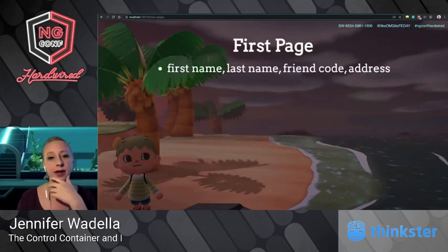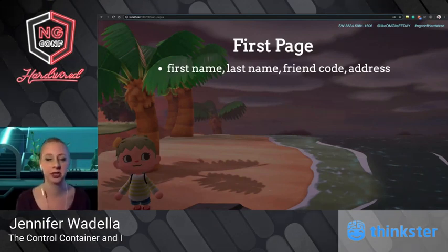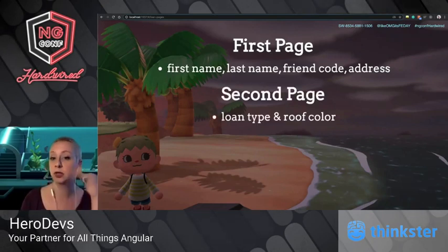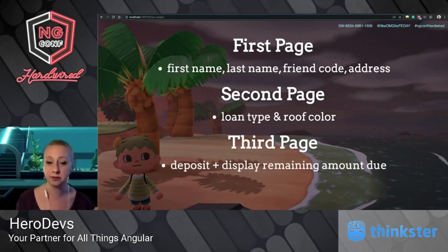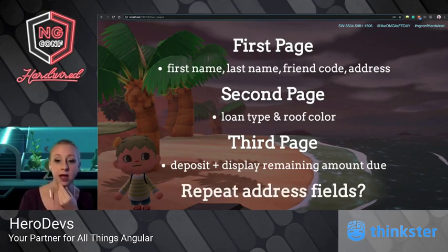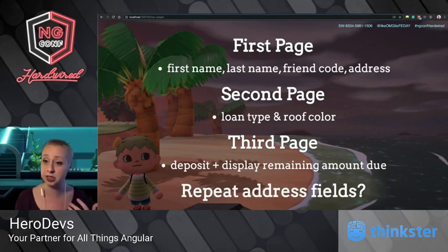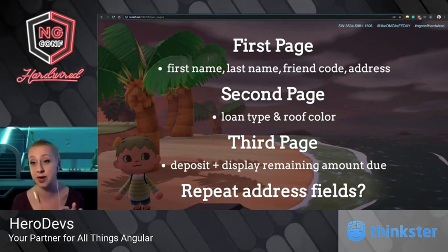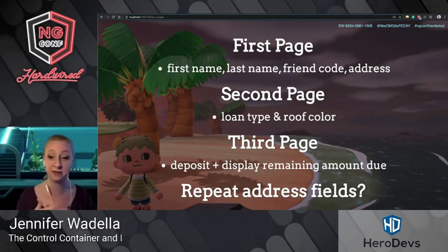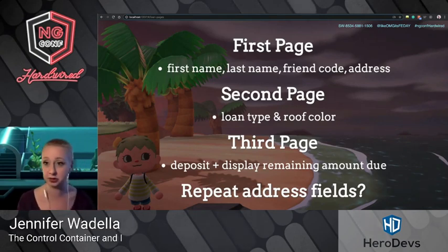I go back to my code and think through the steps: page one will show personal information — first name, last name, friend code, and address. Page two will let the user select the loan type and roof color. Page three will let the user make a deposit and display the remaining amount due. Since address fields might be repeated across the application, it would be a good idea to pull those out into their own component.